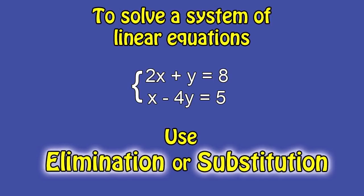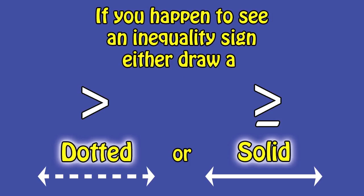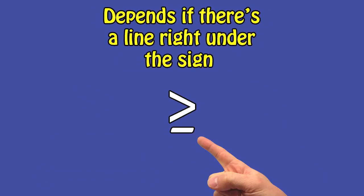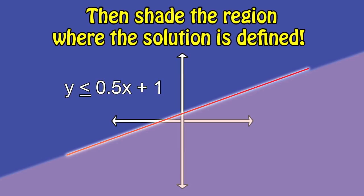Linear equations — we use elimination or substitution. And how can you graph an inequality? Either a dashed or solid line, depending if there's a line under the sign. Then shade the region where the solution is defined.